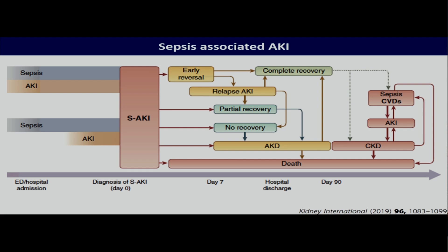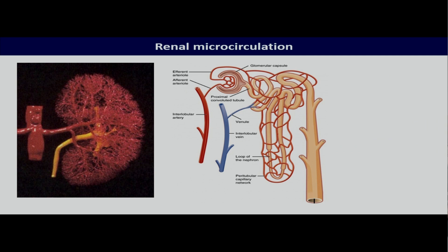Before I talk about the implications, I just want to demonstrate and remind everybody why acute kidney injury is common and why the kidneys are so vulnerable in sepsis. The kidneys are obviously very vascular organs. And on the vascular level, you could almost distinguish between two different forms of circulation: the glomerular capillaries responsible for glomerular filtration, and the peritubular microcirculation responsible to support the tubular cells.